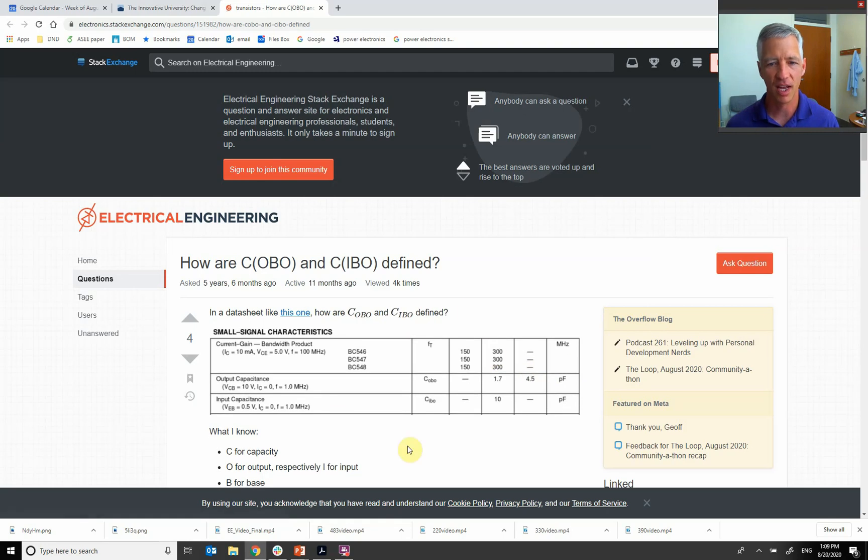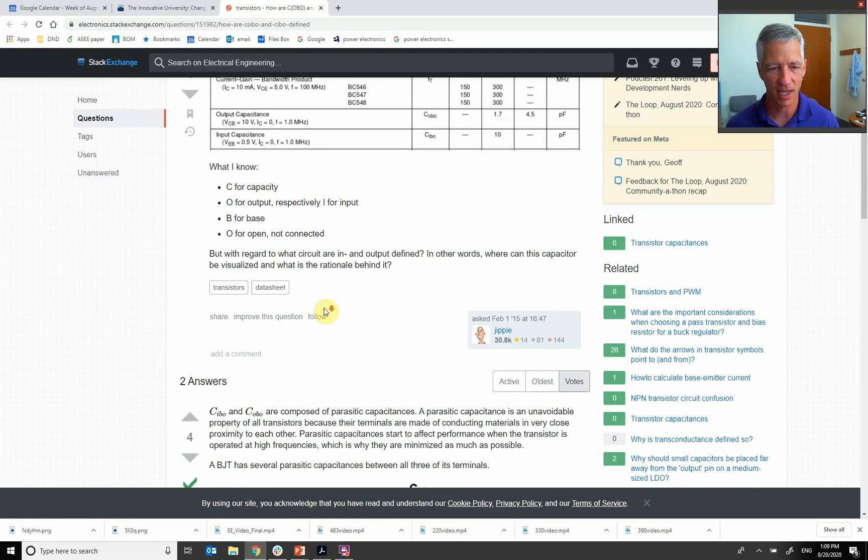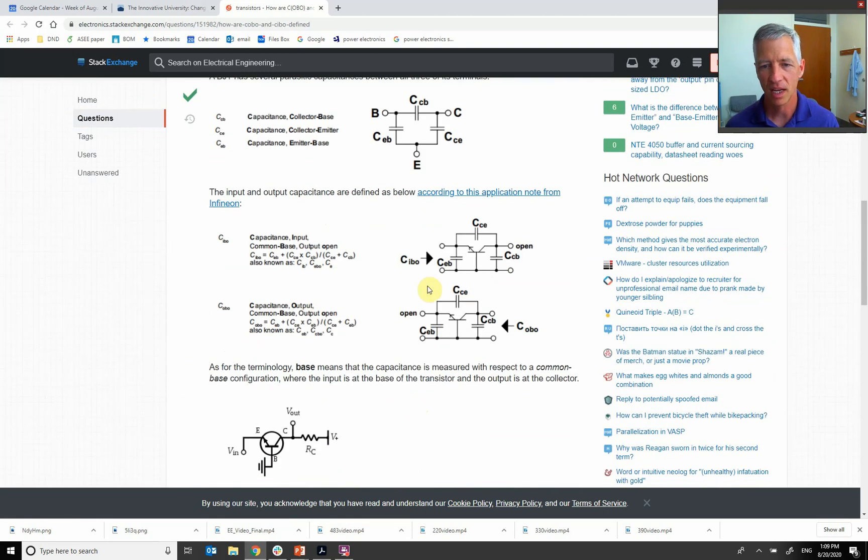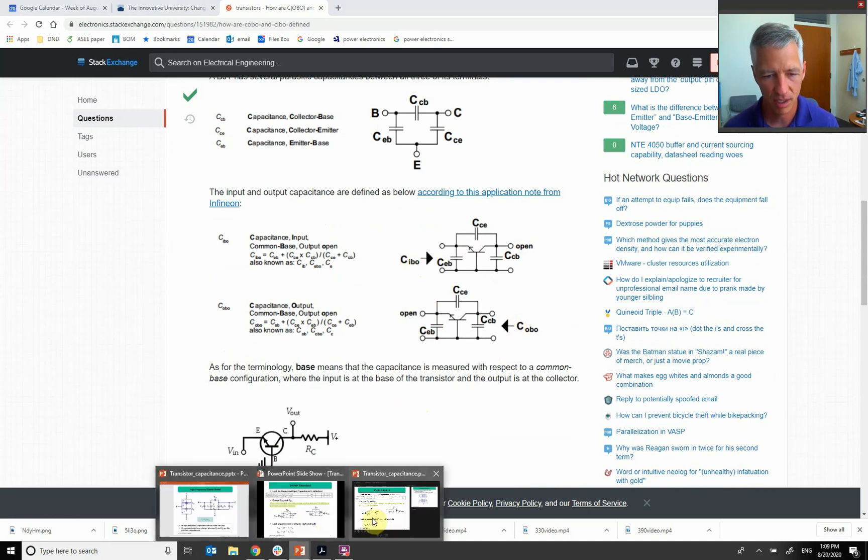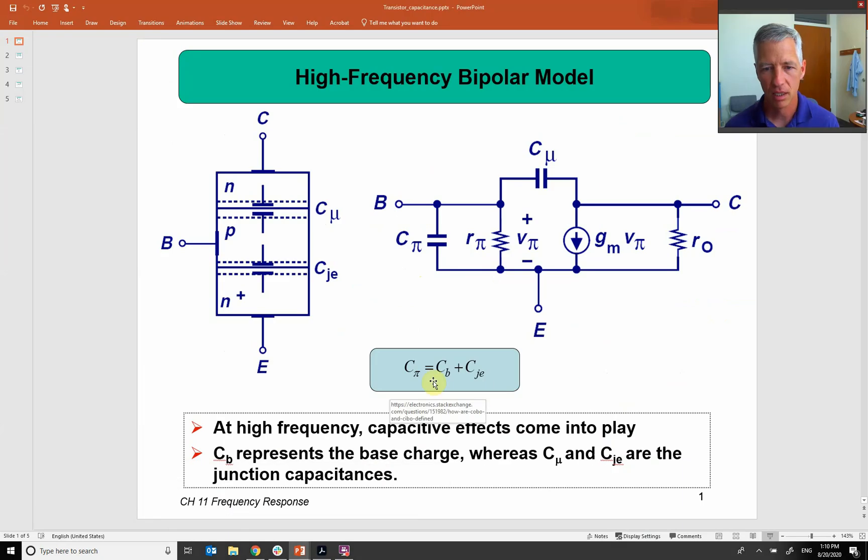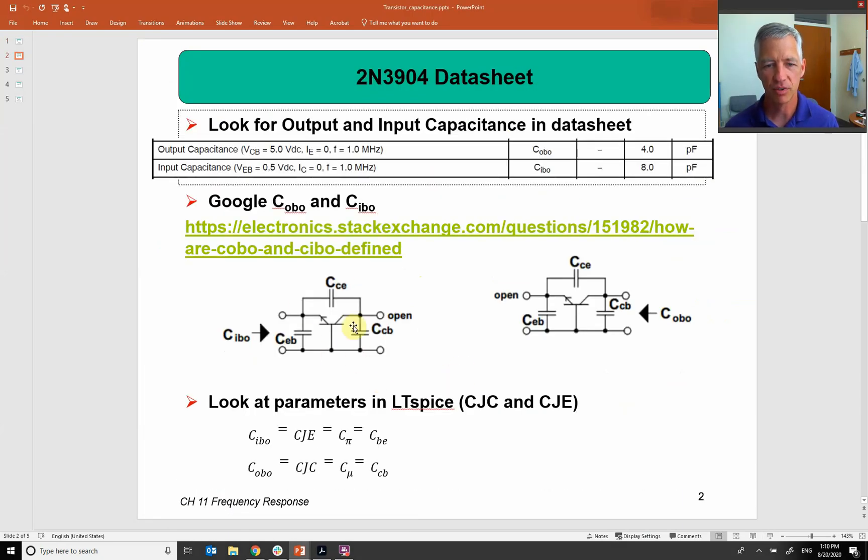So here I pulled these out right here, and here are our two built-in capacitors. So we have to Google what is C_OBO and C_IBO because it's different terminology than the book. If I Google that and look at that, they explain how it all works. Here are some figures that show here is my input side, here is my output side. So I copied those over here to look at my output and my input. You see my input side is basically connected between my base and my emitter, and my output side is connected between my base and my collector.